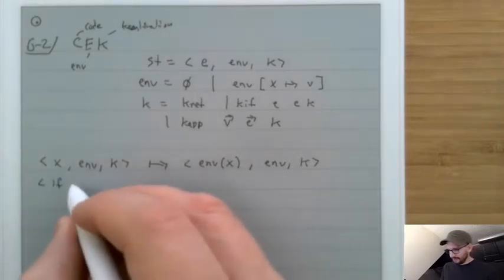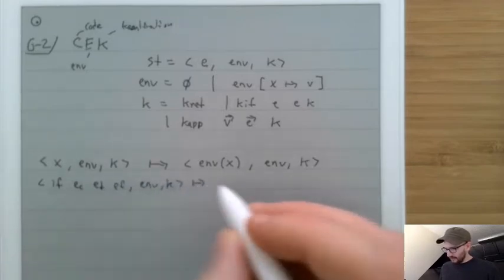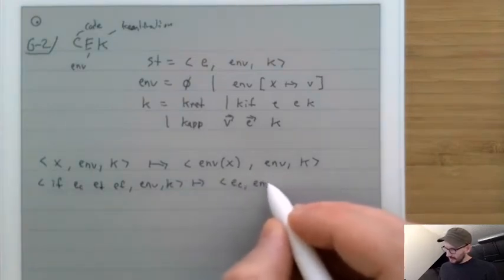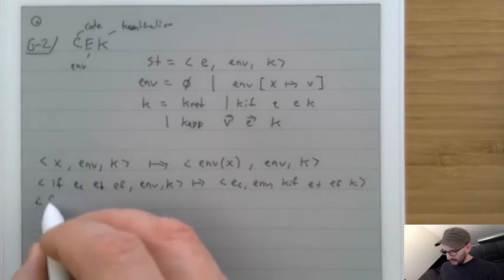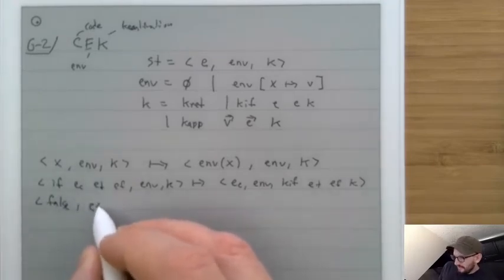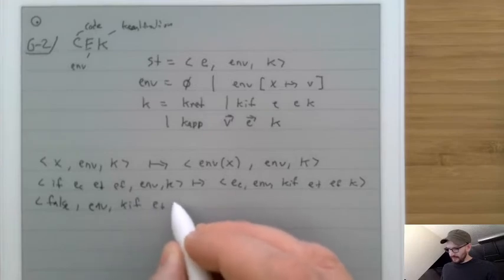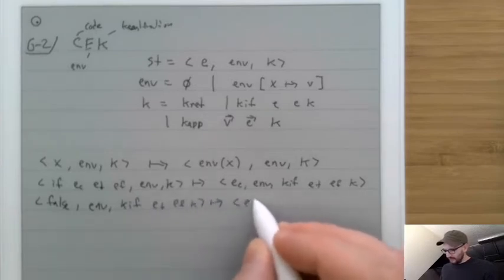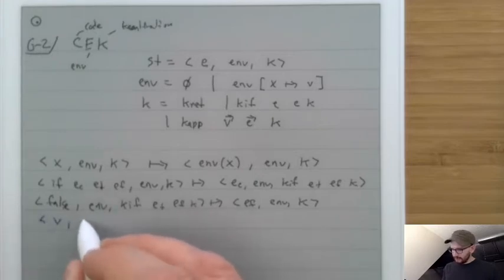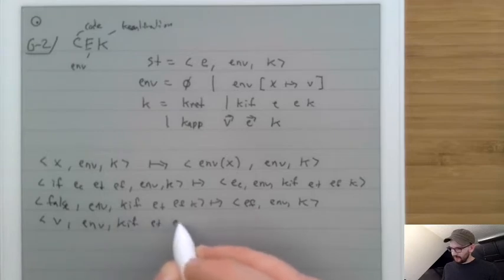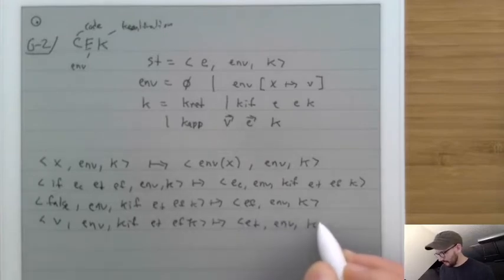If you have an if with EC, ET, EF, an environment, and K, you go to EC with the same environment and a KIF containing ET, EF, and K. If you reach false with some environment and a KIF of ET, EF, and K, you focus on EF with the saved environment and pop the frame. If you have another kind of value, you focus on ET.